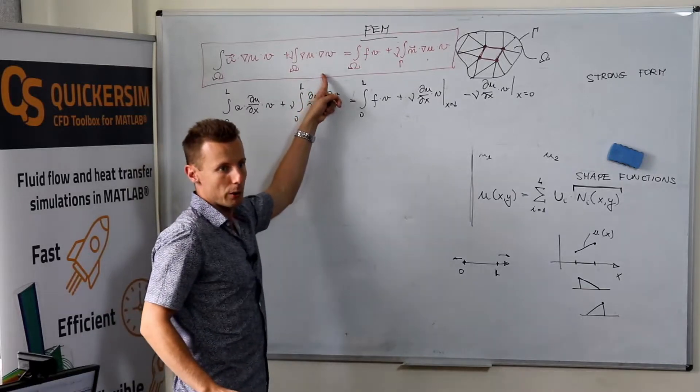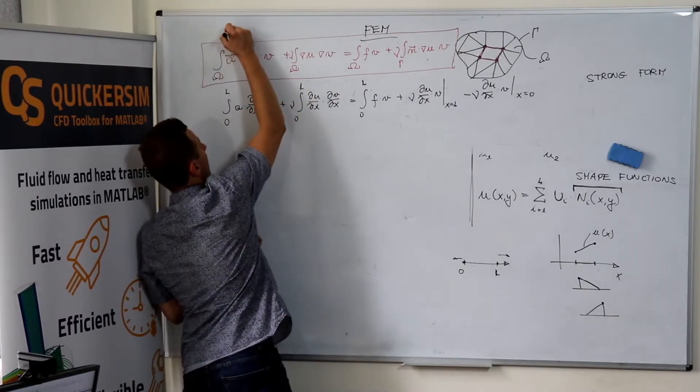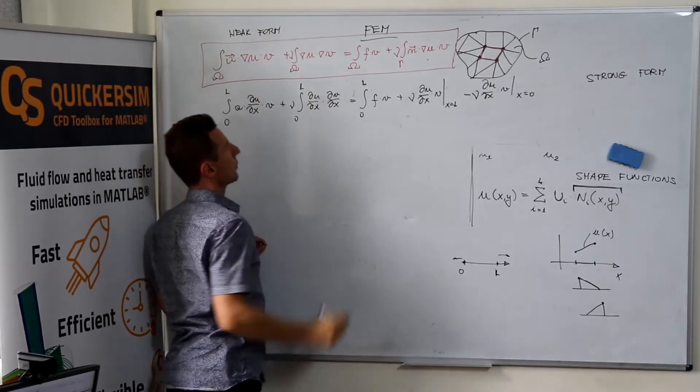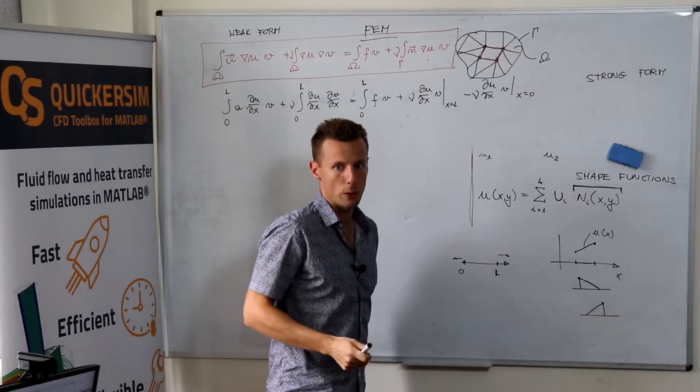The differential formulation that we've started with is called the strong form or strong formulation. The one that we've arrived at is called the weak form or weak formulation.